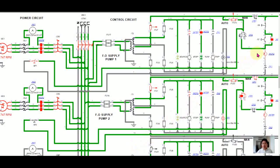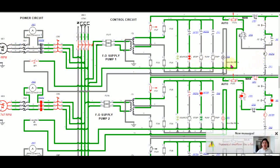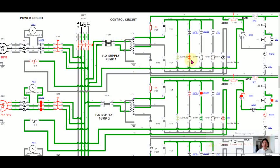You can manually stop pump number one since it is still running — just press the stop button. As you can see, the indication for fuel oil supply pump number one shows it is stopped, and your pump is already stopped. Fuel oil supply pump number two is running.